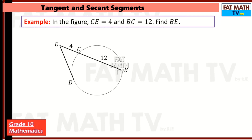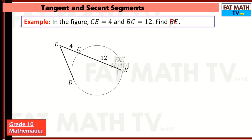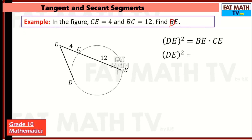Another example: CE is 4 and BC is 12. Find DE. DE is the tangent segment, so DE squared equals BE times CE. BE equals 4 plus 12, which is 16, and CE is 4. So DE squared equals 16 times 4, which is 64. Taking the square root, DE equals 8 units.